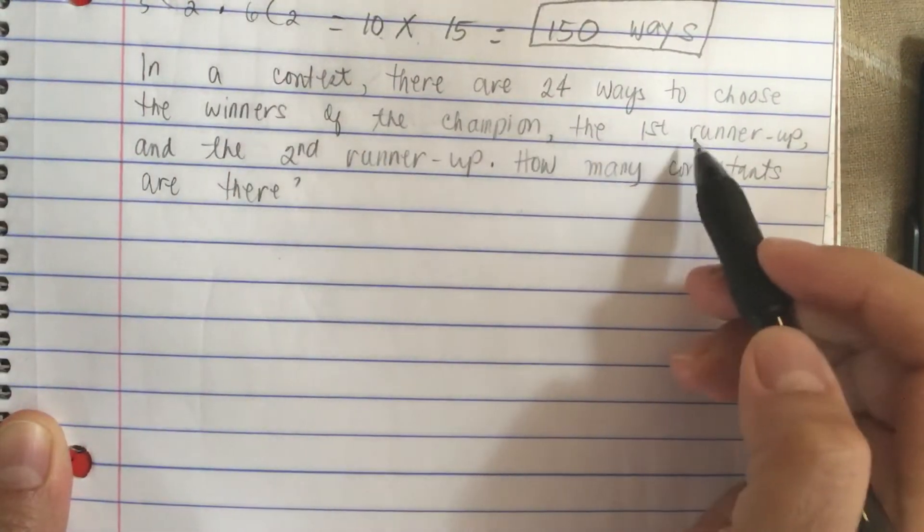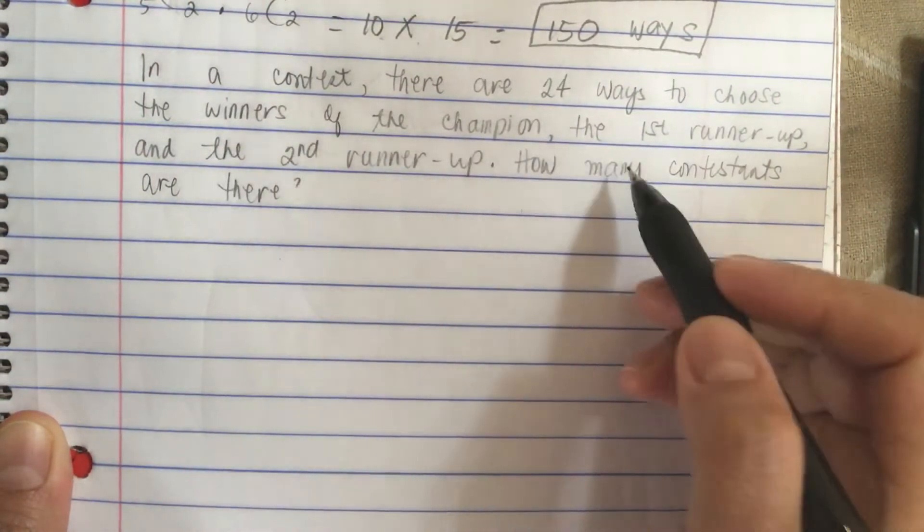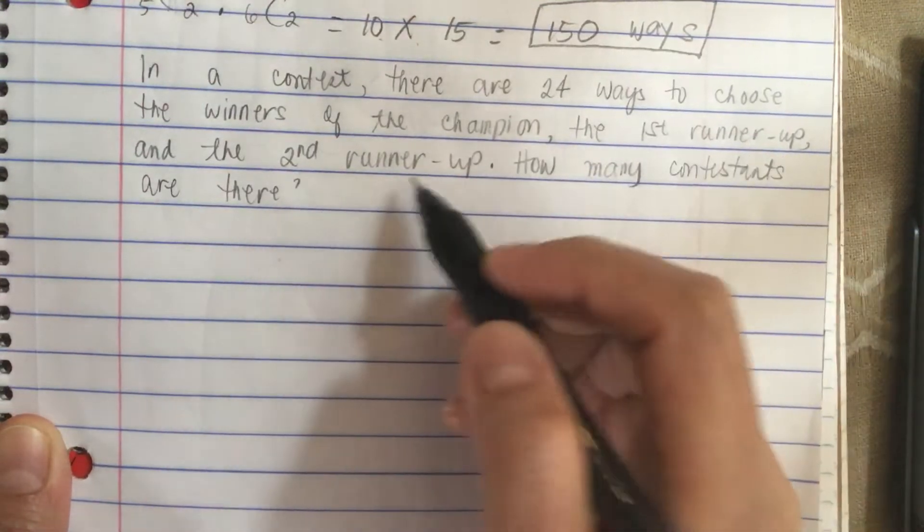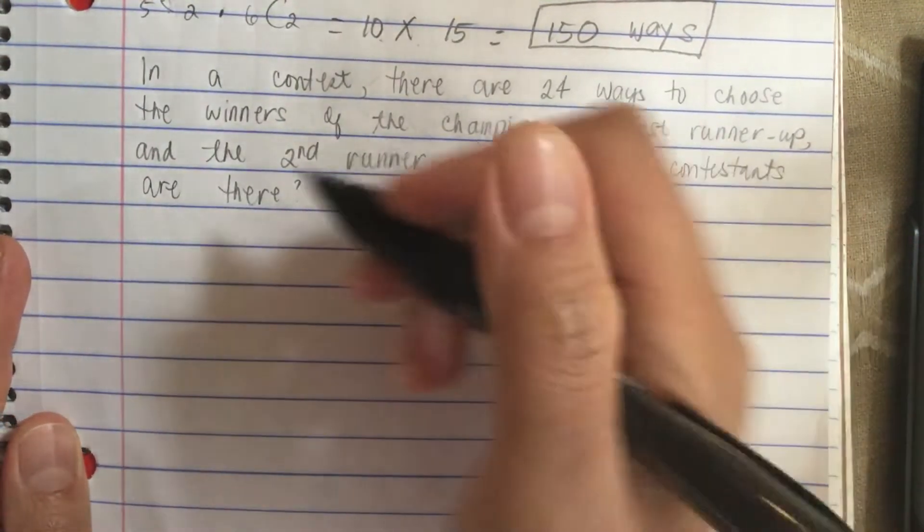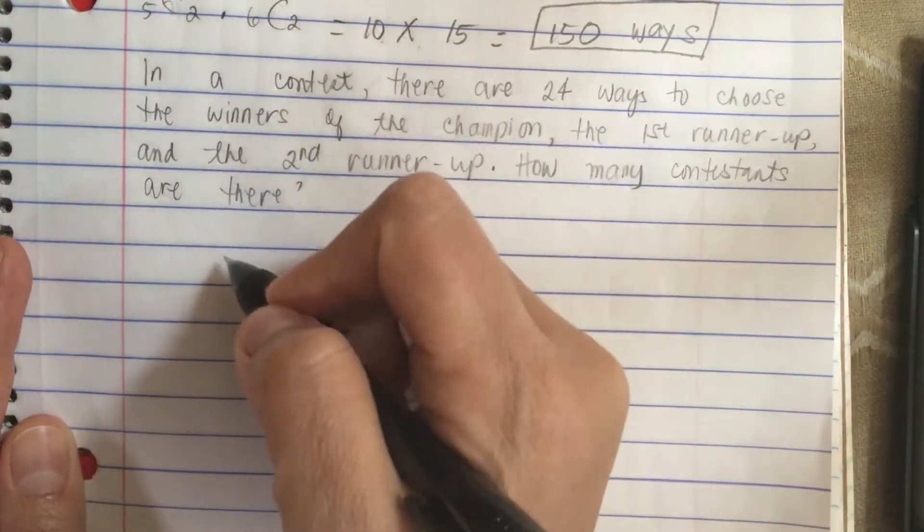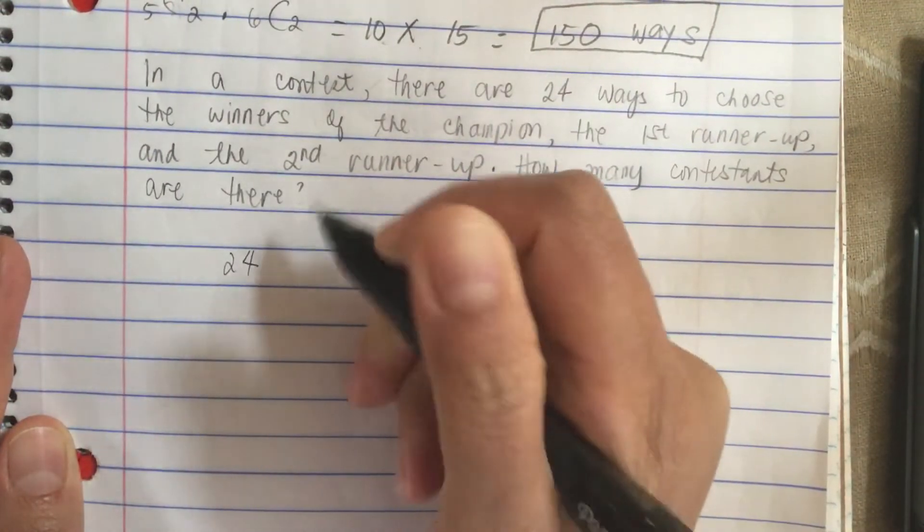In a contest there are 24 ways to choose the winners of the champion, the first runner-up, and the second runner-up. How many contestants are there? So the 24 is the total ways.